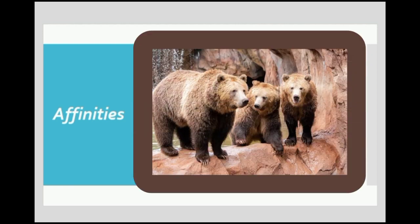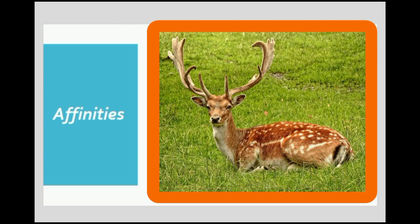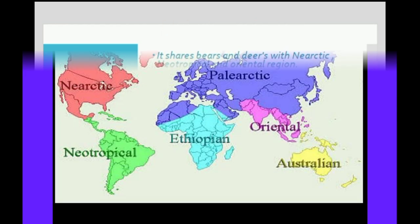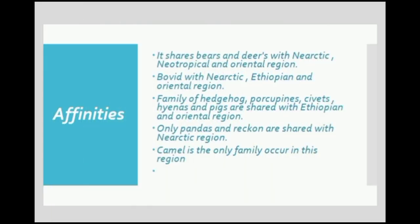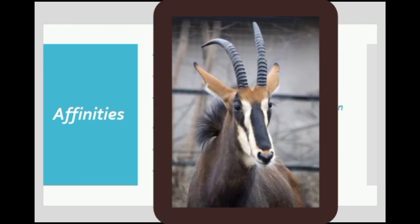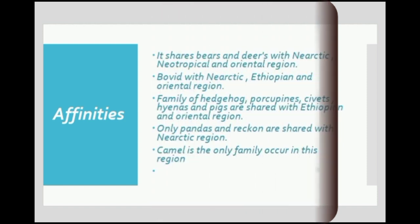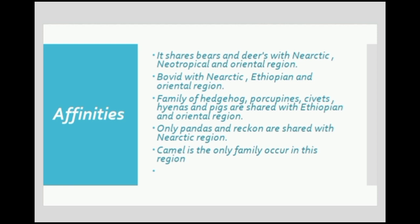The Palaearctic region shares bears and deer with the Nearctic, Neotropical, and Oriental regions — these animals are present throughout all four regions. Next, bovids are shared with the Nearctic, Ethiopian, and Oriental regions, meaning bovids are present in the Palaearctic as well as in those three other zoogeographical regions.